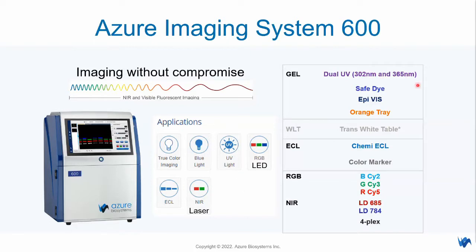In this system you have dual UV, which allows you to visualize safe dye signals and ethidium bromide gels. In the western blot imaging context, it allows us to capture signals from chemiluminescence blots and also fluorescence blots. We have a few light sources in the system — notably RGB and near-infrared fluorescence, utilizing two types of excitation light sources. I will explain this in the second session.